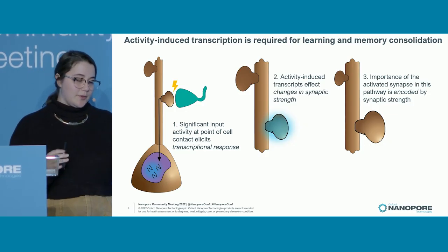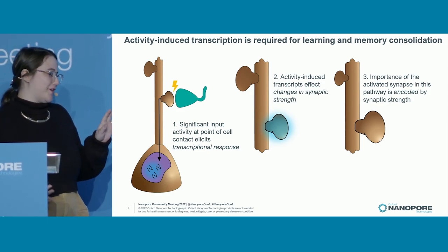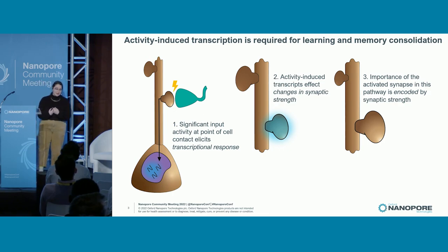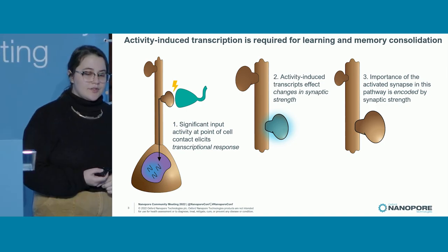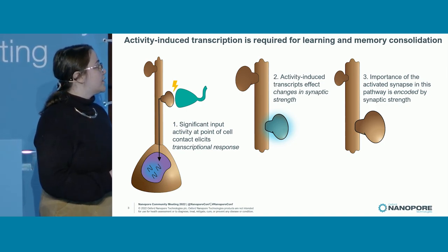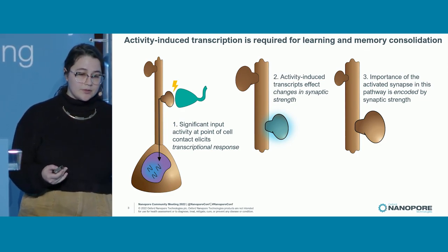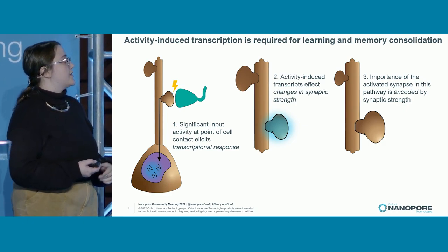I'm a neuroscientist and I'm absolutely obsessed with this biochemical phenomenon called activity-induced transcription. Brain cells communicate with each other across points of contact called synapses, and significant input activity at these points of cell contact oftentimes will elicit a transcriptional response in the receiving cell. The prevailing model is that these activated activity-induced transcripts then traffic back to the synaptic locus of activity where they're locally translated into proteins that affect changes in synaptic strength.